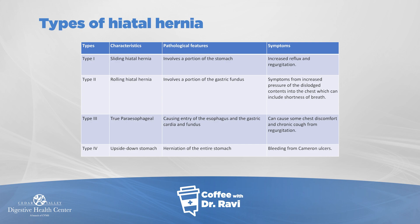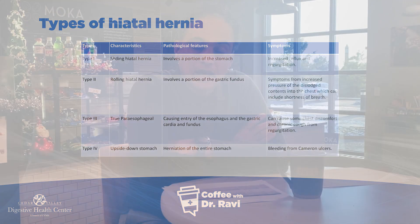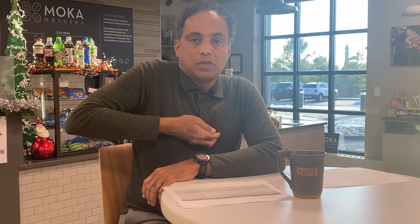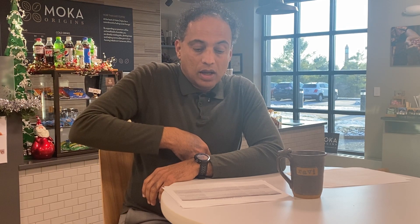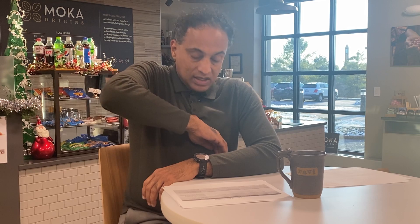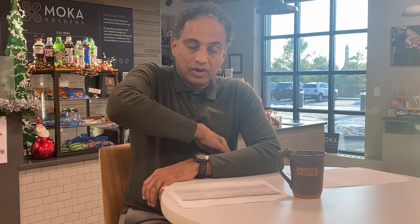There are four types of hernia. One is a sliding hernia, the second is a rolling hernia, there's a paraesophageal hernia, and Type 4 where it's an upside-down stomach. In Type 1, a portion of the stomach can get pushed up into the chest.